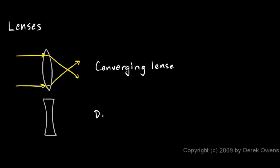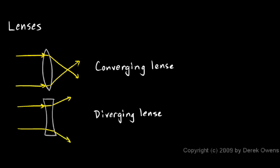The other type of lens is called a diverging lens because it will cause incoming parallel rays of light to diverge. If a ray of light strikes it here, these rays of light will spread out. They don't converge. You can still, though, calculate a focal length.